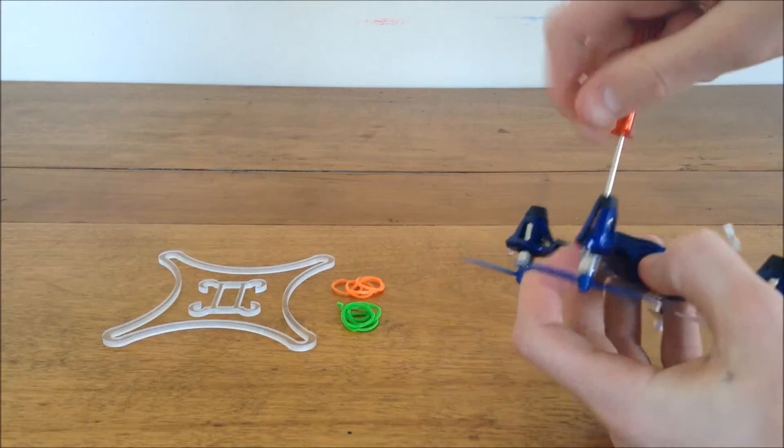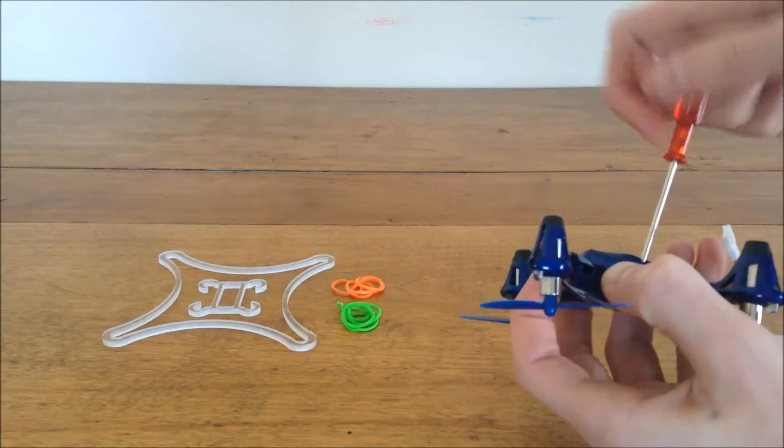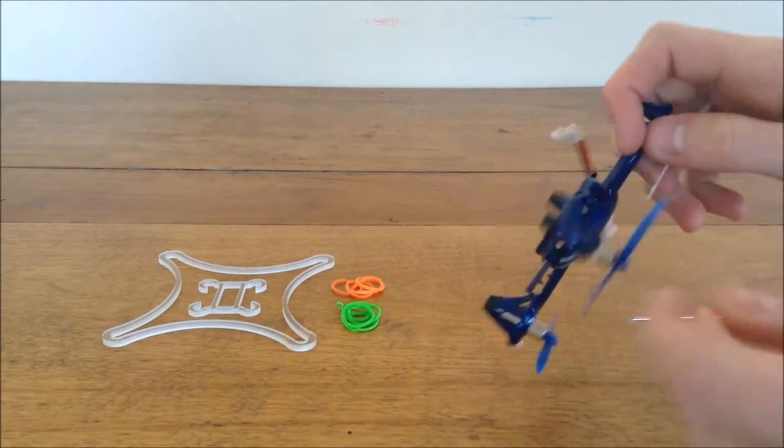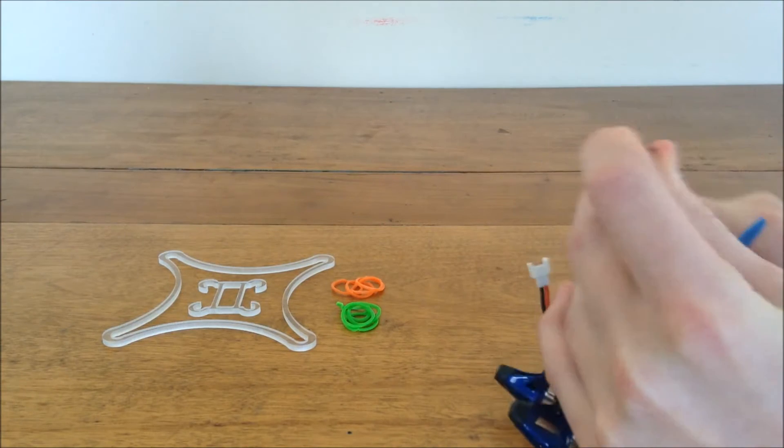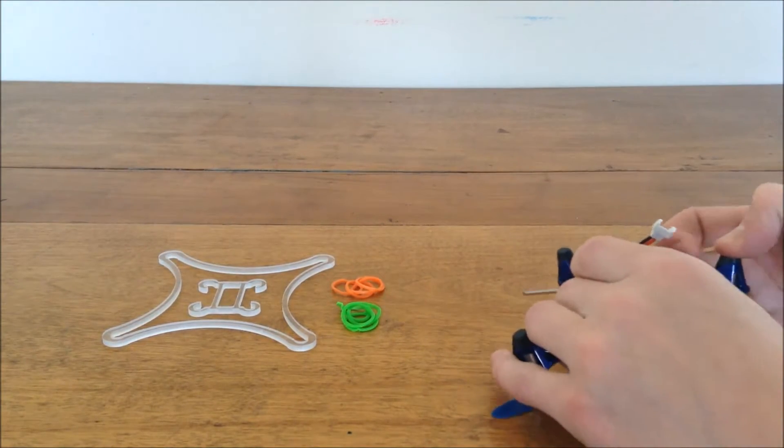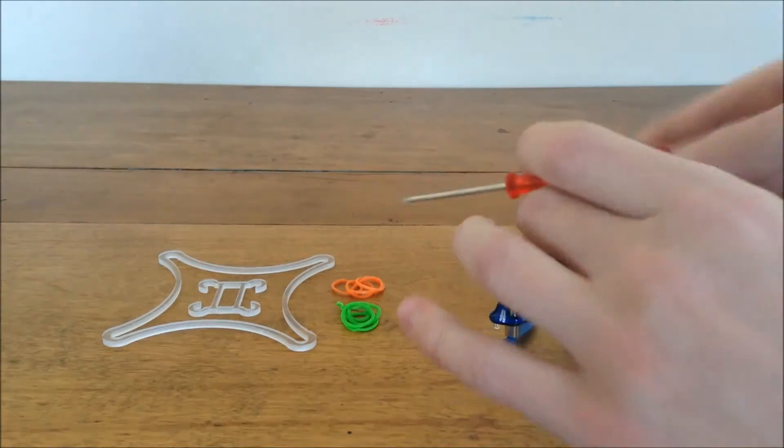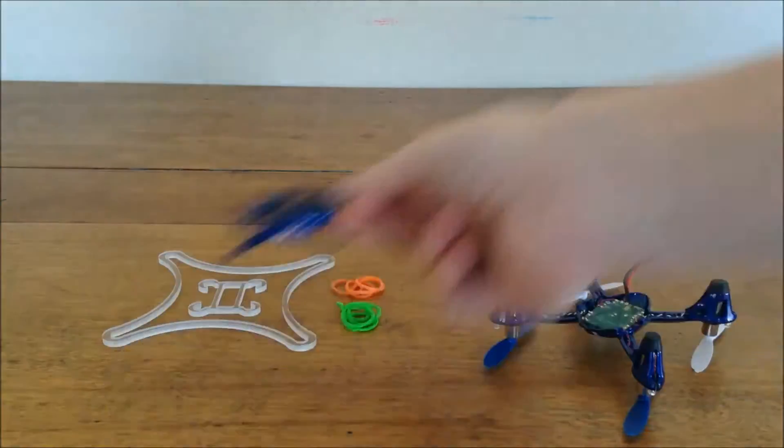Might have to undo the screws a little bit. There we go, that part's off. This back one's a little not coming off. Try and pry it. There we go, there's that lower body section for the Hubsan, I'll put that over here for now.